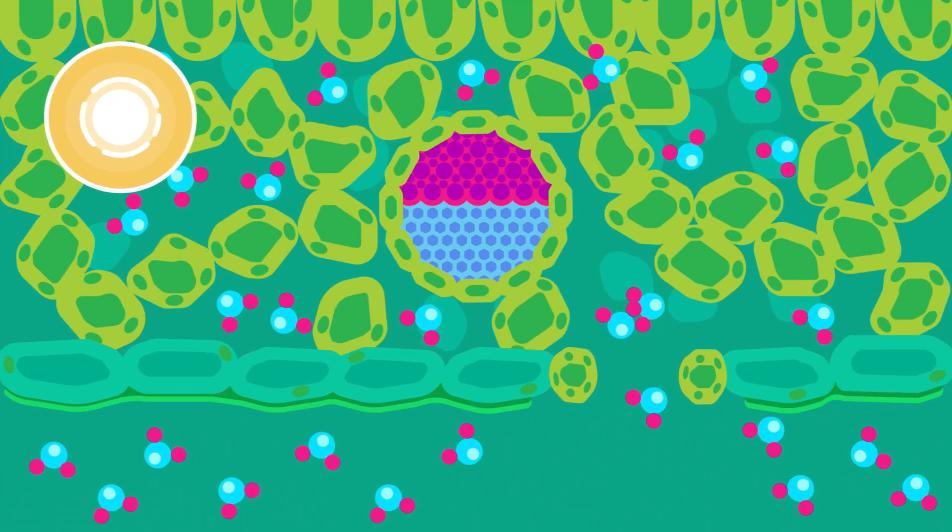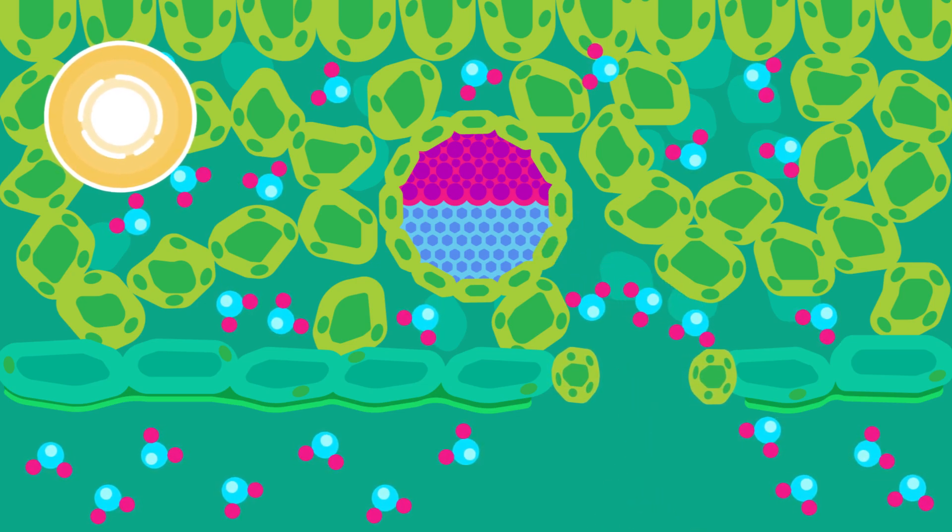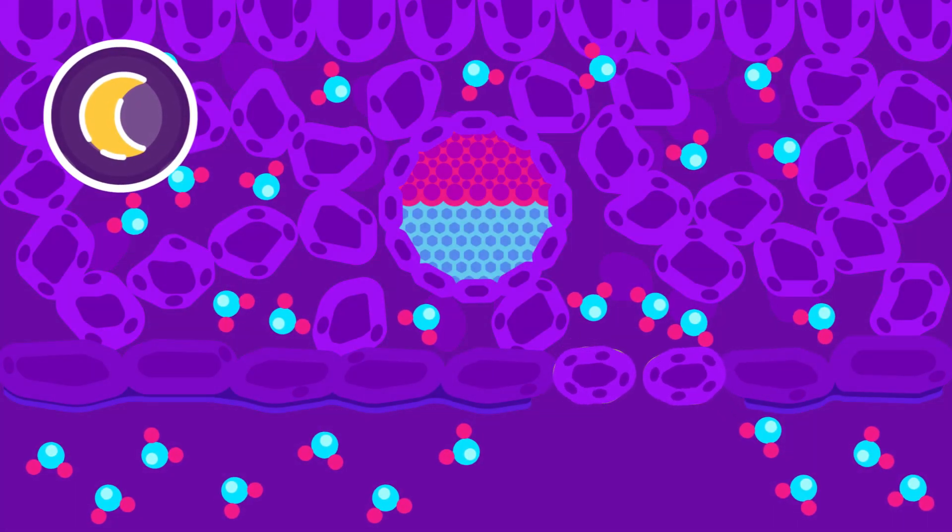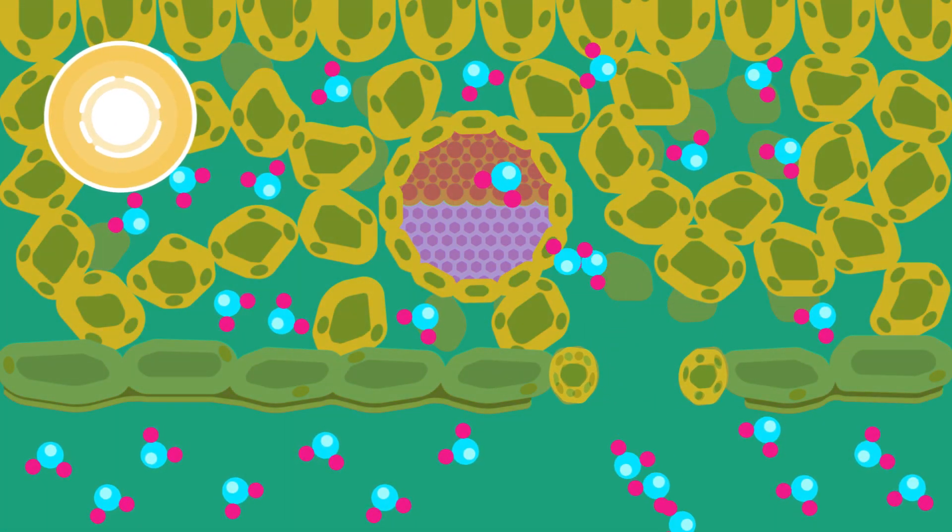Light: Light affects the size of the stomatal opening on the leaf, thus affecting the rate of transpiration. During the night, or in the shade, the stomata close and reduce the rate of transpiration. But on a sunny day, the stomata open wide and increase the rate.